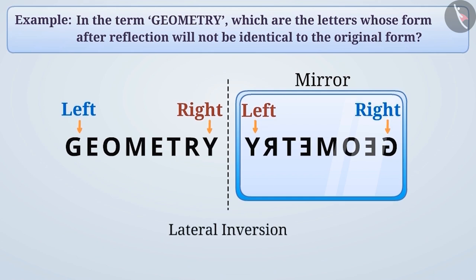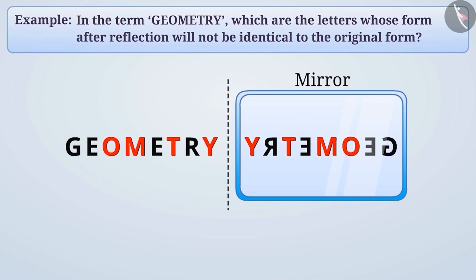Here, we can see that even after reflection, there is no change in the form of the English letters O, M, T, Y. That is, their shape remains identical to the original form even after reflection.